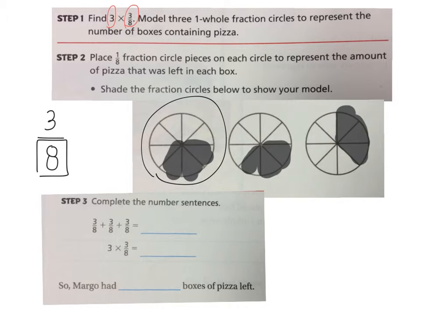So then we can complete the number sentence. Three-eighths plus three-eighths plus three-eighths is how many eighths? Nine-eighths. And so we know that, again, this repeated addition, three-eighths plus three-eighths plus three-eighths is the same as three times three-eighths. So what is three times three-eighths? Nine-eighths.